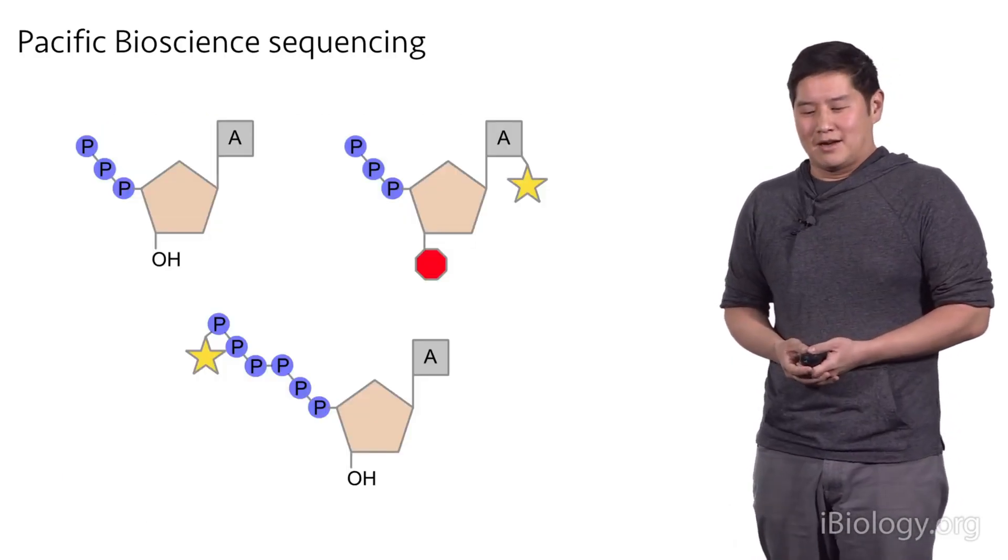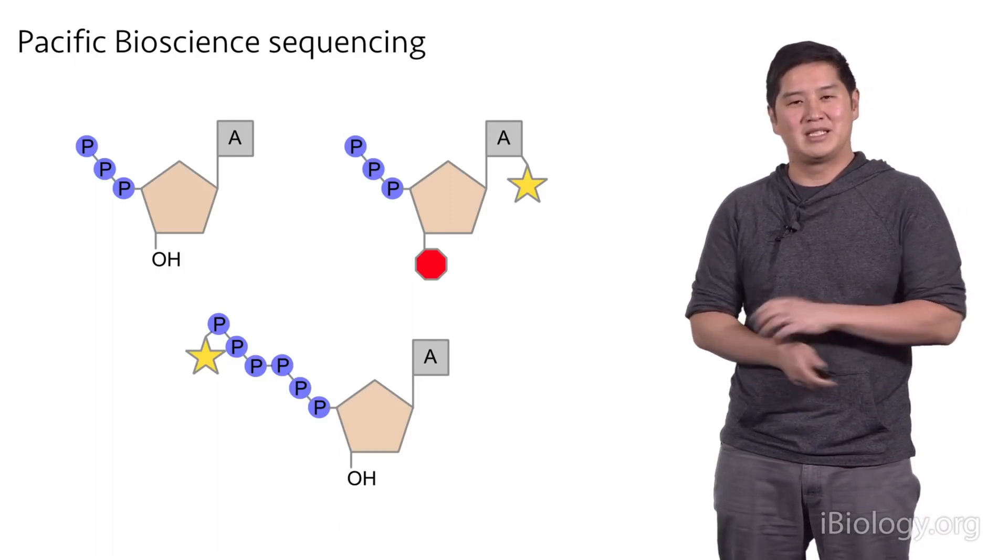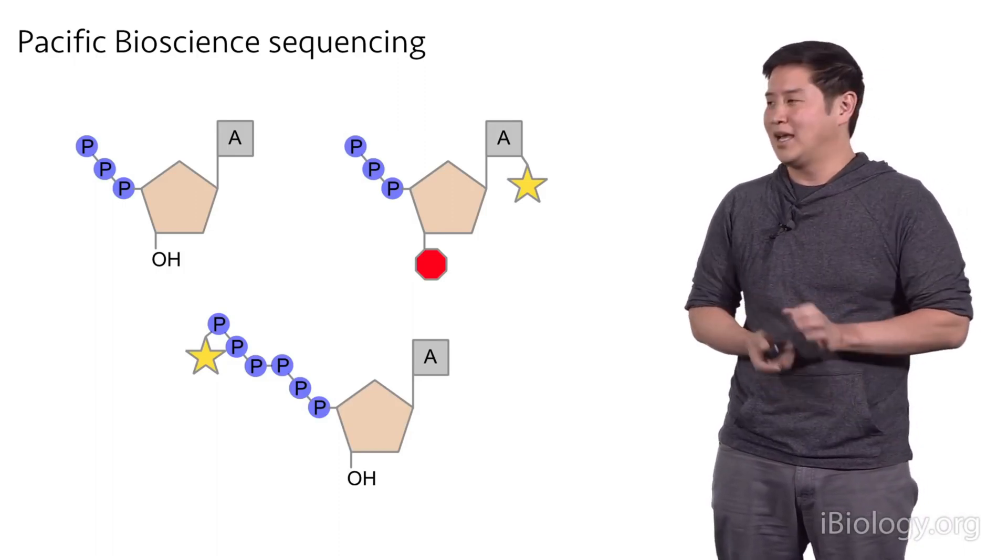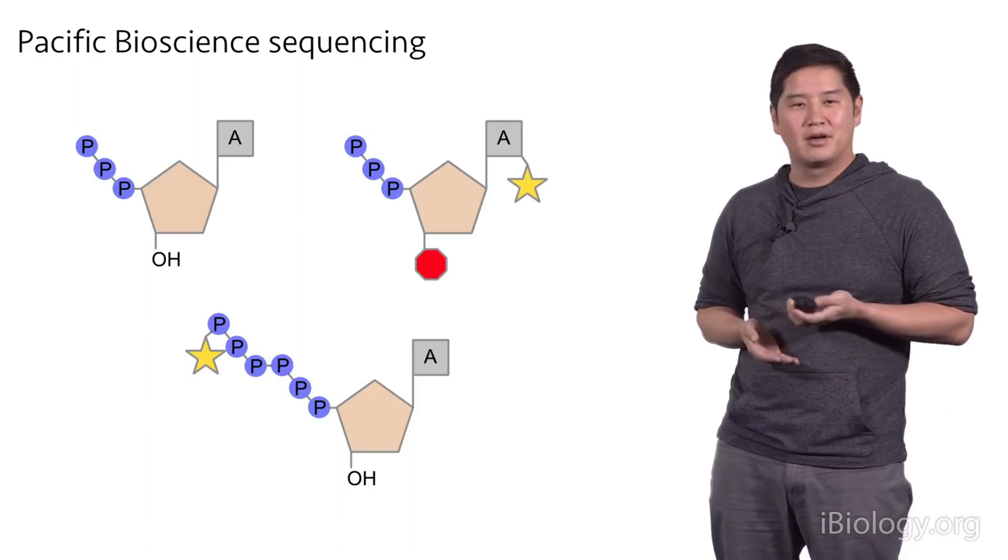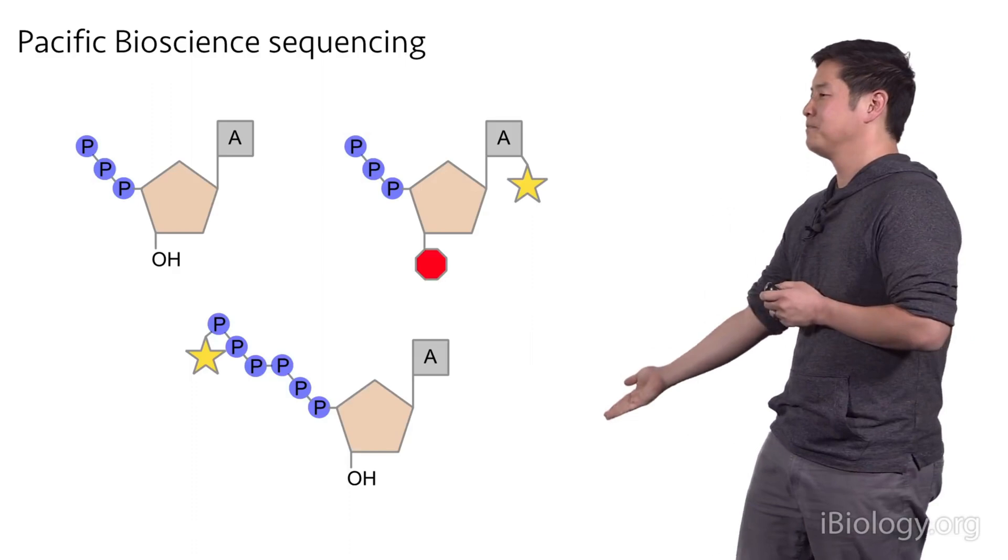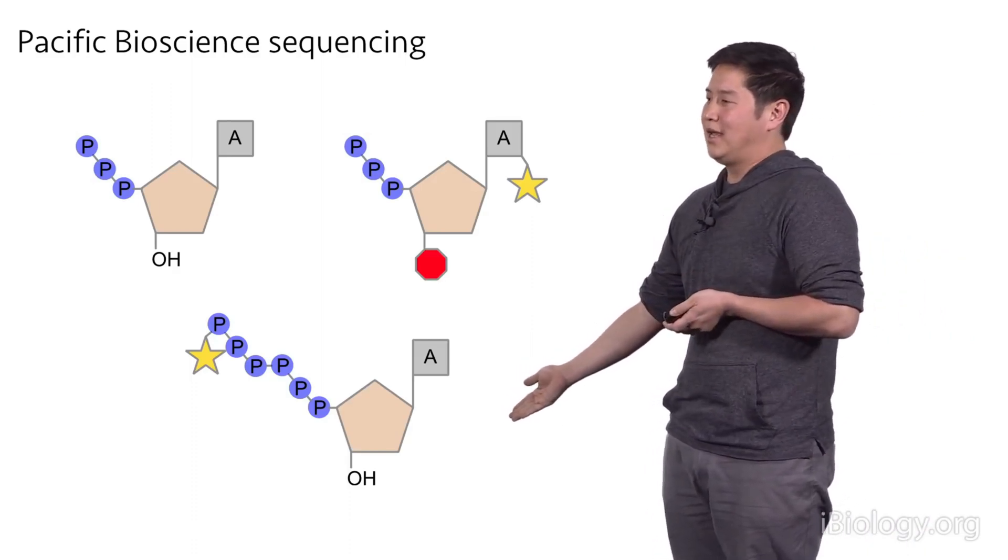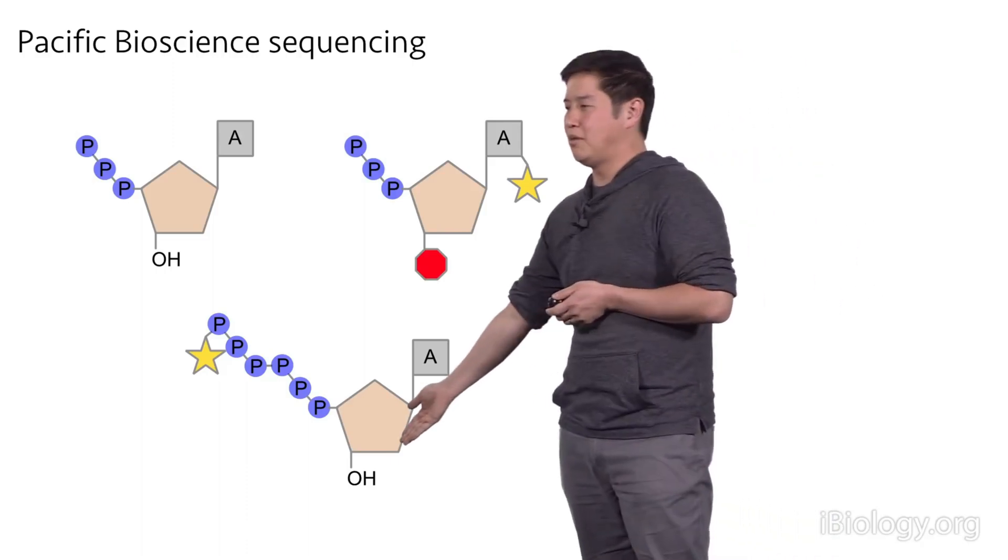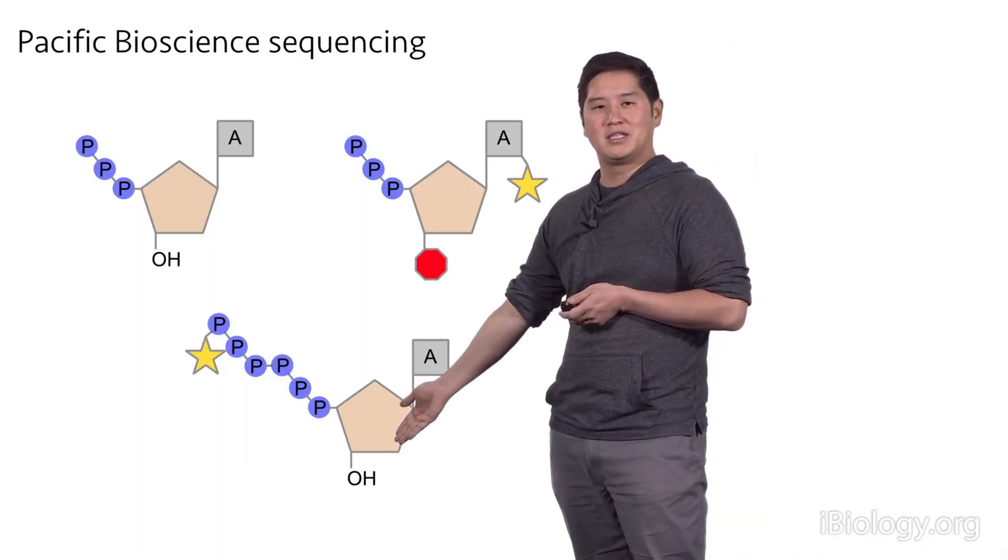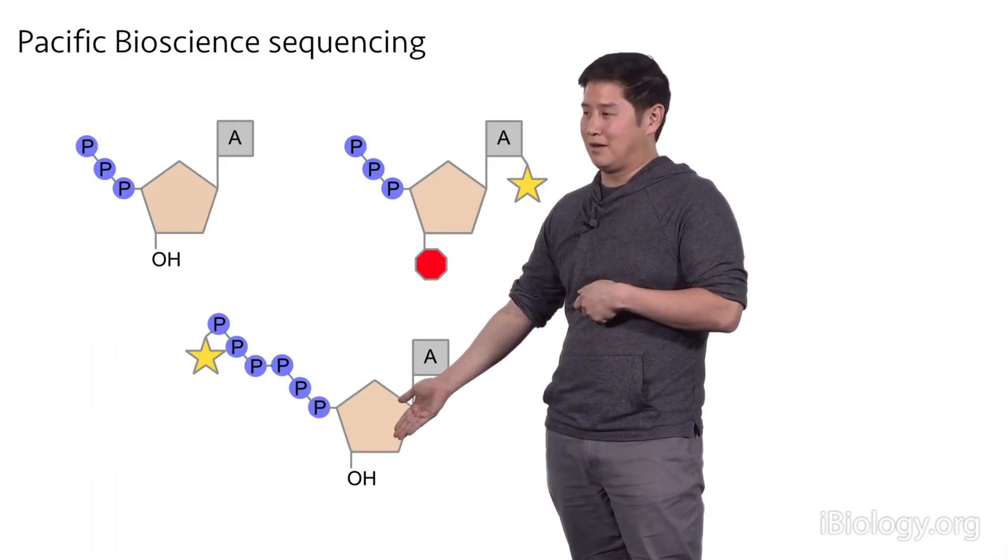So the last technology I'm going to talk to you about today is Pacific Bioscience sequencing. And this is another sequencing by synthesis method. And it uses building blocks similar to traditional Sanger sequencing and Illumina sequencing, but they're slightly different. So down here, I'm showing you an A base from the Pacific Bioscience sequencer. And you'll notice first, there's no block on three prime hydroxyl end. This means that once this gets incorporated, another base can get incorporated right away.